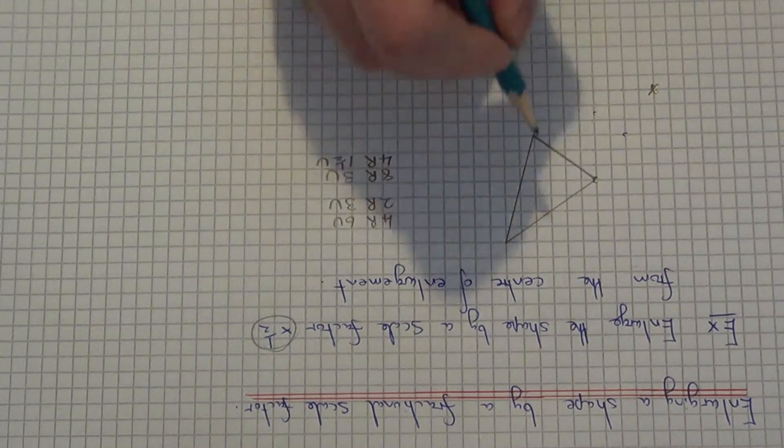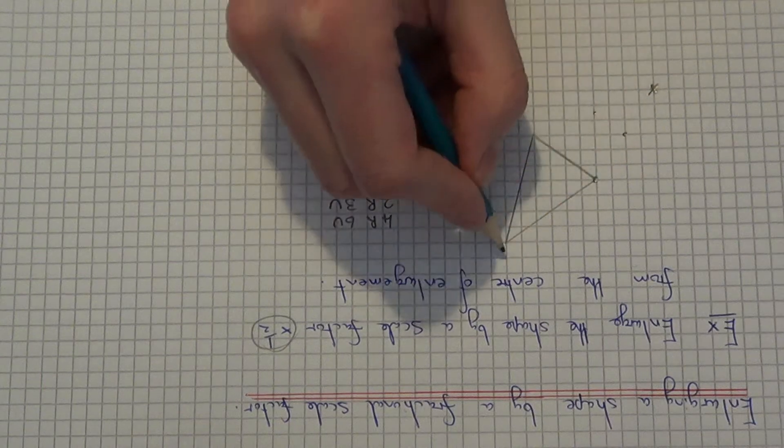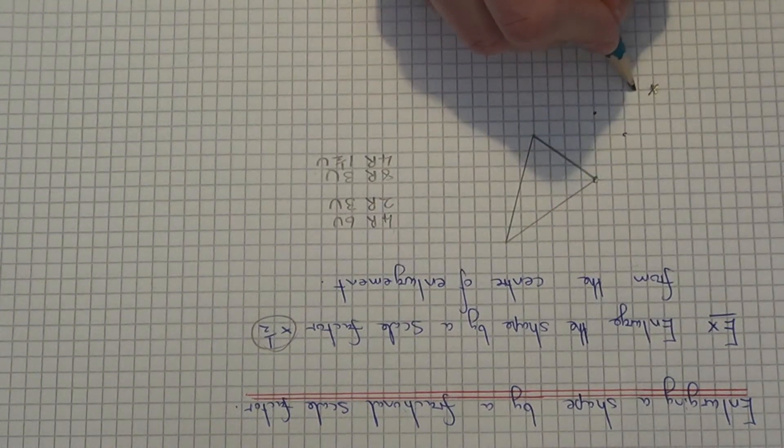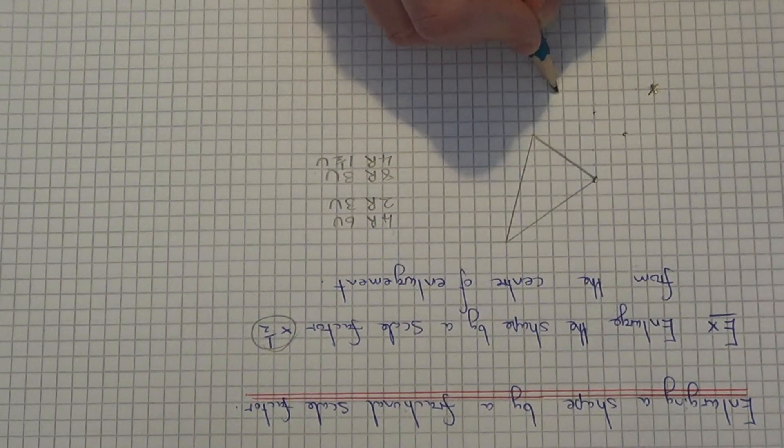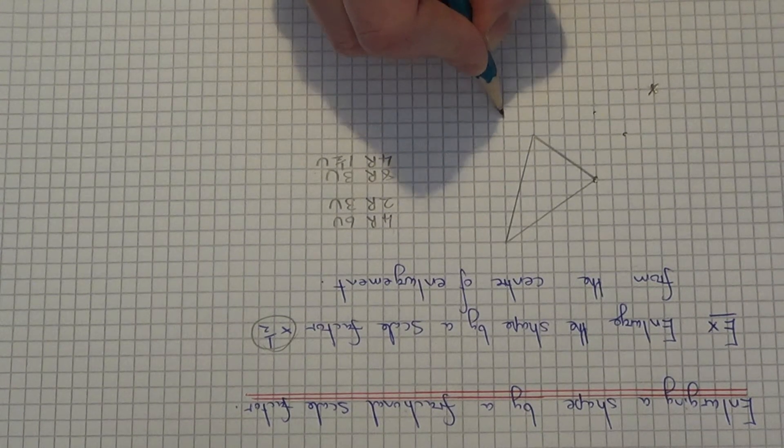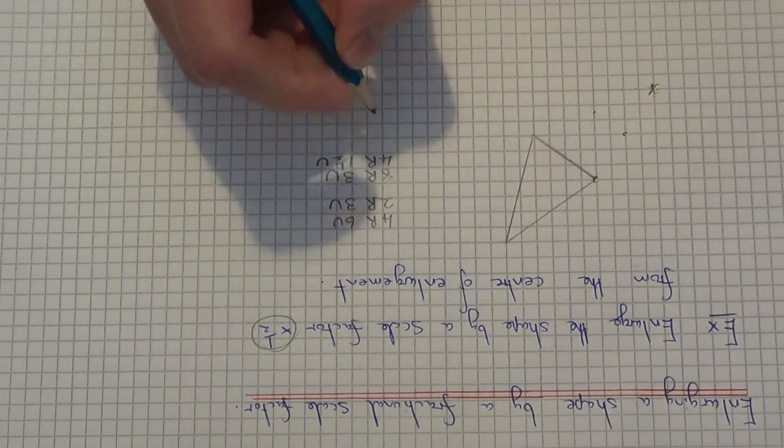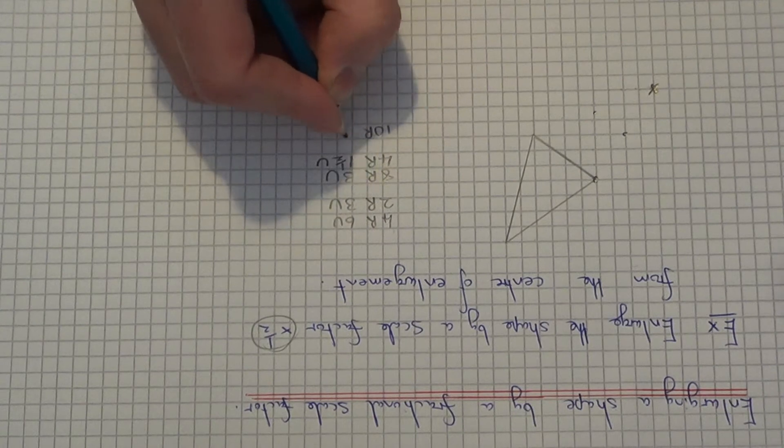So we've got 2 corners done, we've just got to do the final corner now. So again if we count the distance from the centre to that corner, it's 10 right and 10 up.